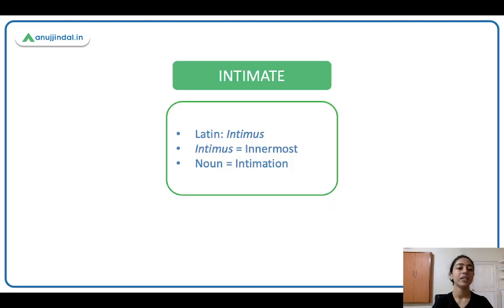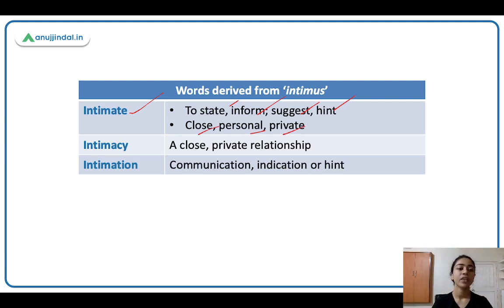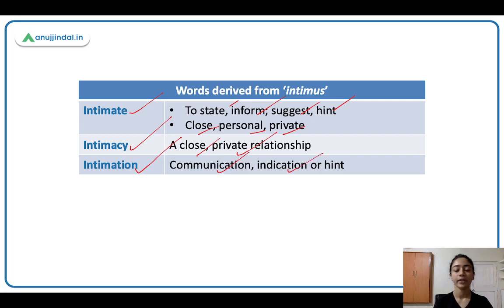Intimate comes from Latin 'intimus,' which means innermost. The noun is intimation. From intimus we have intimate — to state, inform, suggest, hint. And doosra meaning hai intimate ka: close, personal, private, personal relations — intimate relations. Intimacy is a close, private relationship. And intimation is communication, indication, or hint.